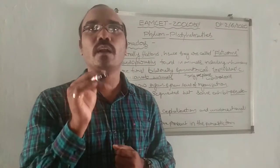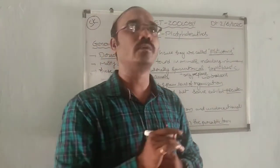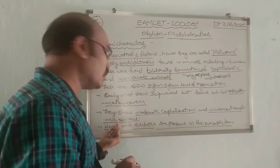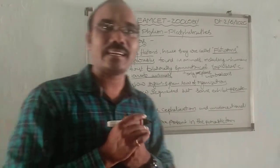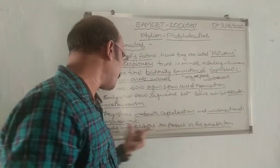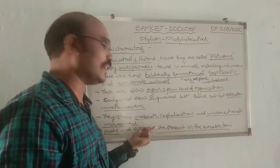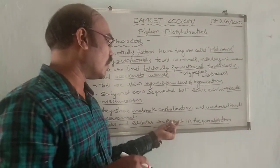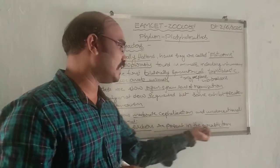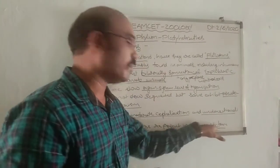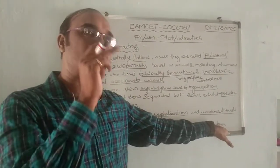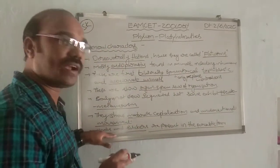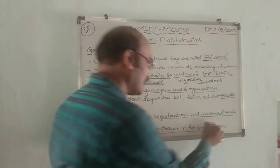They have some adaptations as endoparasites. They contain hooks and suckers. By using these hooks and suckers, they survive inside the host organism. These are present in the parasitic form, which shows parasitic nature — they have hooks and suckers.